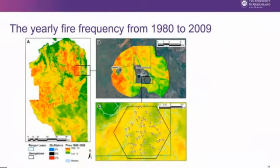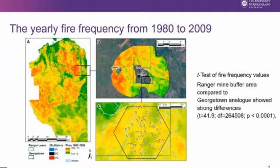The other aspect was that fire frequency in the region is a long-term disturbance regime. Across Kakadu it's changed and increased in frequency over time. We looked at 30 years prior to the actual vegetation survey being done and compared that of the Georgetown area to the surrounds. Using a t-test of pixels, we found that the range of the buffer area, excluding the Georgetown analog, was seemingly different to the Georgetown area. The Georgetown area had much lower fire frequency than the other areas around the mine — some of that may be related to distance from Jabiru, depending on how fires are lit — resulting in a significant difference to the surrounds overall.